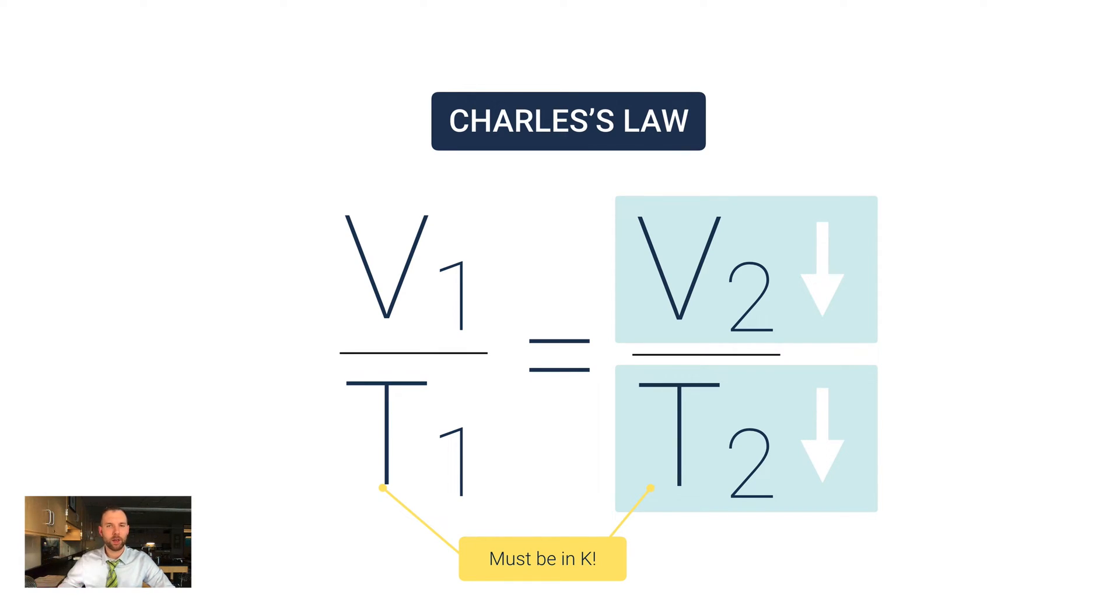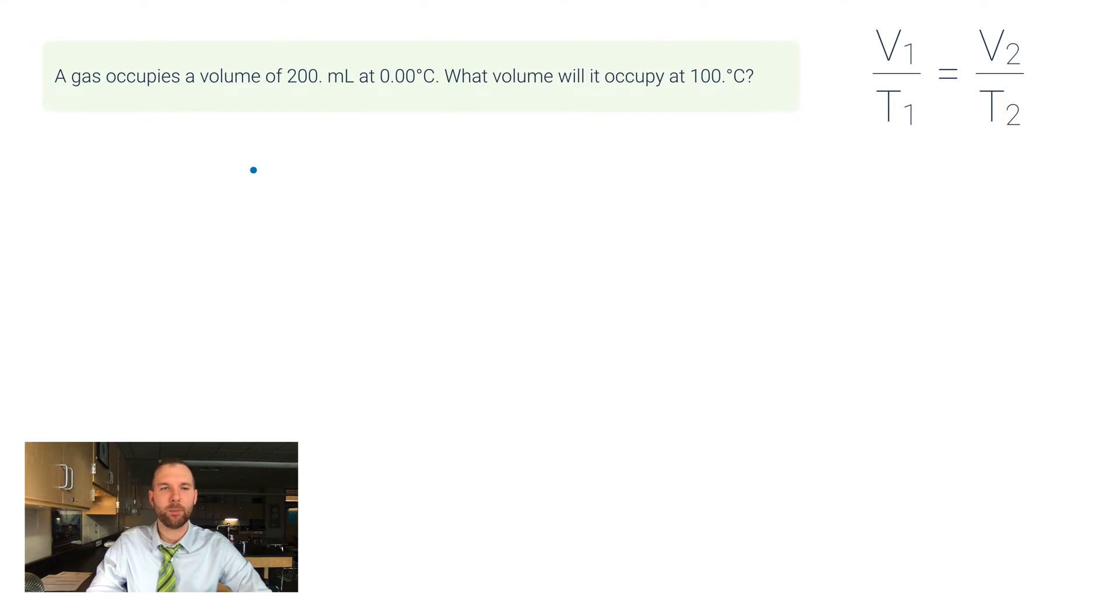So let's do an example problem. This says: a gas occupies a volume of 200 milliliters at 0 degrees Celsius. What volume will it occupy at 100 degrees Celsius? So one of the first things you should notice is that we've got Celsius temperature measurements in here.